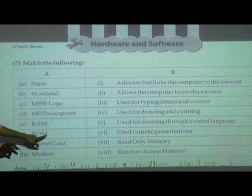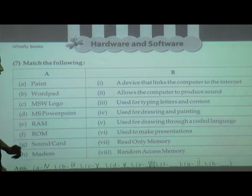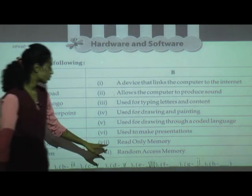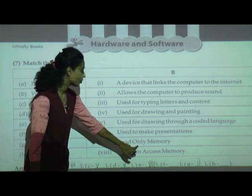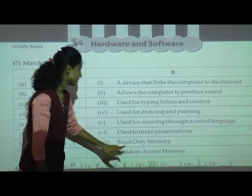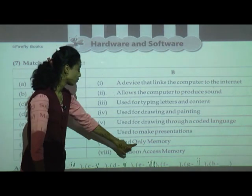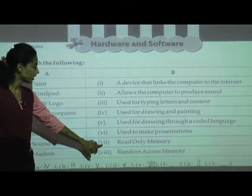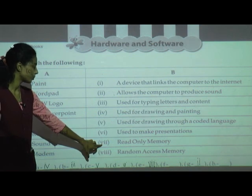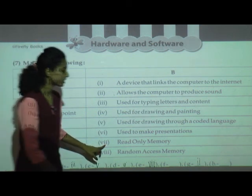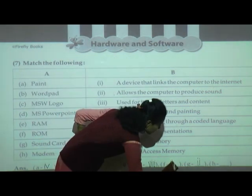ROM — what is the long form of ROM? Read only memory — it is number seven. In front of F, we have to write seven.